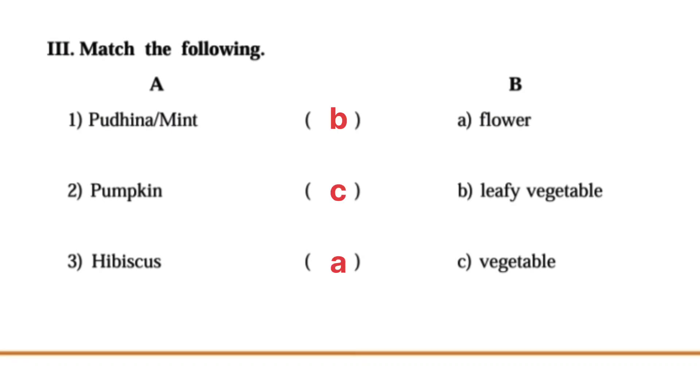Next one: Match the following. Pudina or mint - Leafy vegetable. Second one Pumpkin - Answer C vegetable. Third one Hibiscus - Answer A flower.